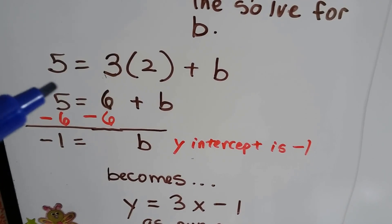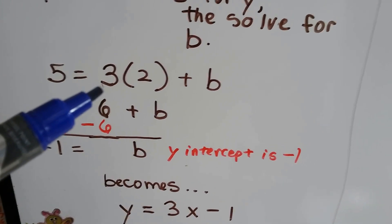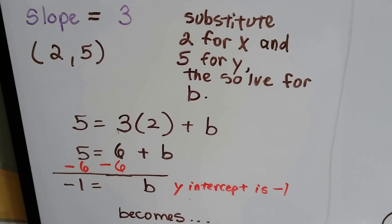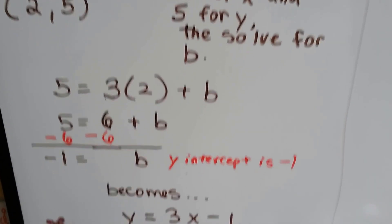So we've got 5 equals the slope of 3, because that was the slope, times 2, that's the x value, and then plus b. Now we're going to solve for b.